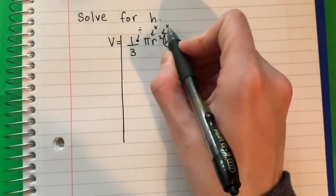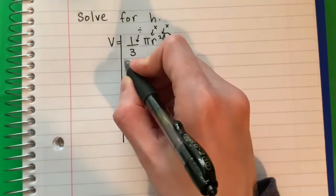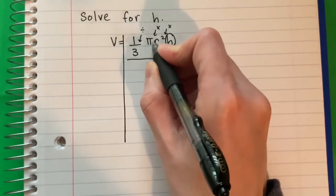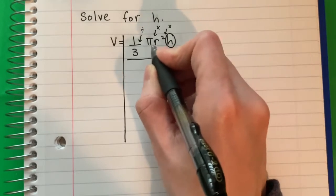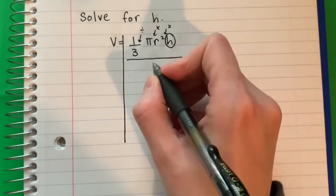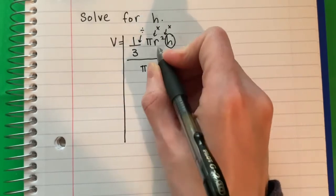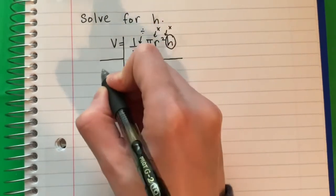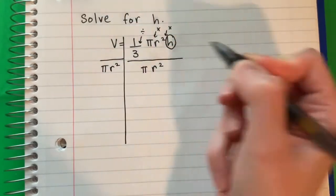The opposite of multiply is divide, so I'm going to divide. And I'm going to do both π and r squared. Voy a hacer ambos π y r cuadrado. So π r squared, and I'm going to copy, divided by π r squared.